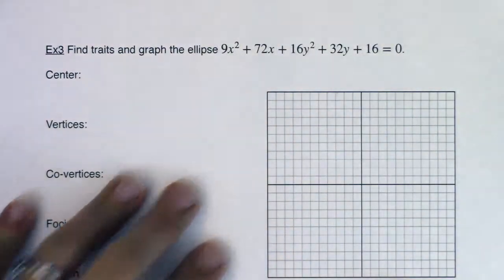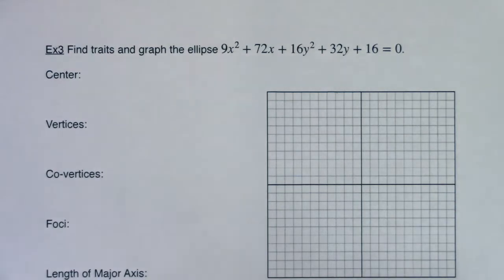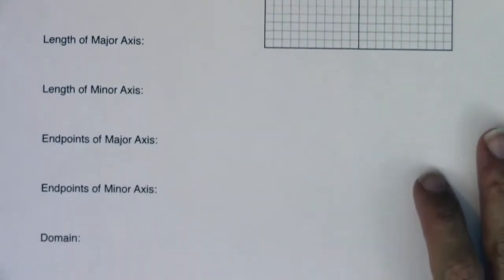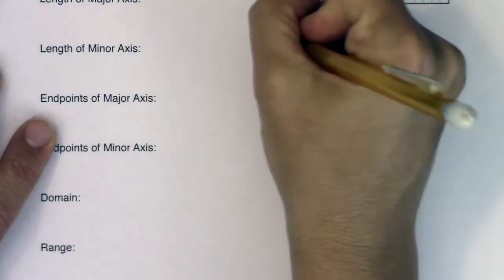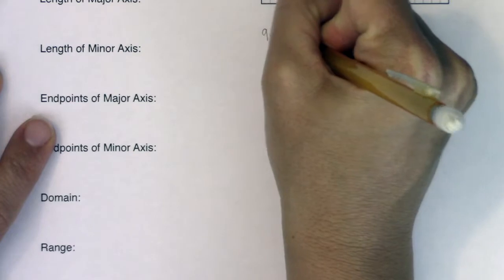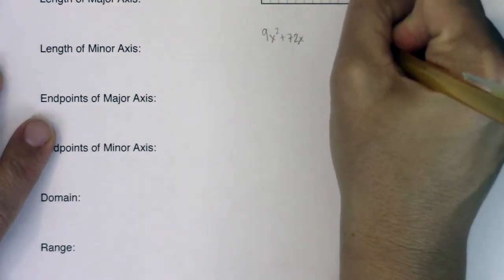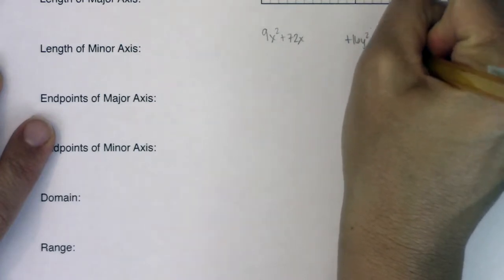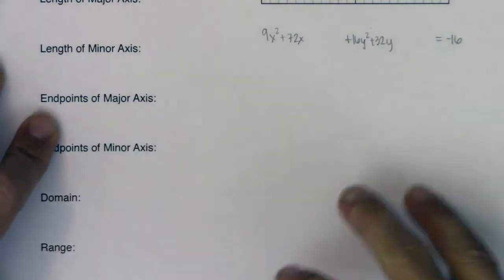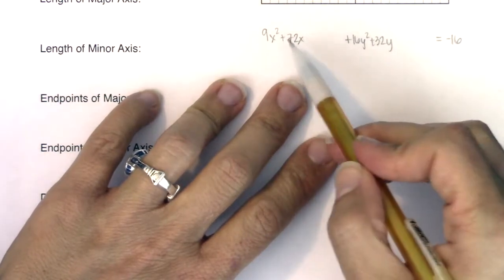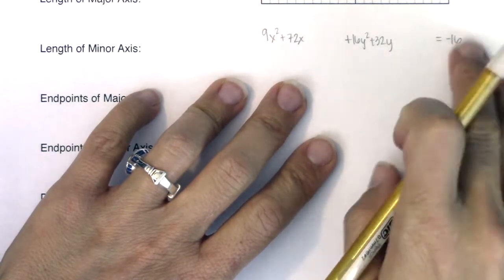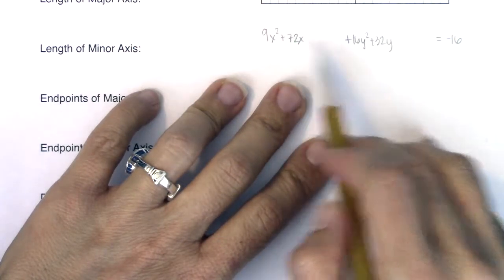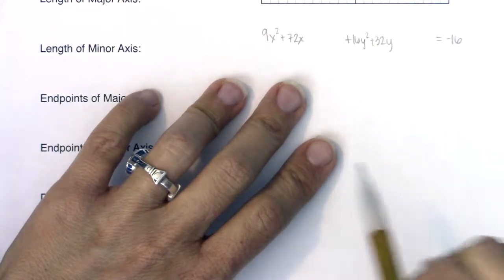Let's get this equation into standard form and then start picking off all of these traits. When completing the square, your starting point is: get all the terms with x clumped together, get all the terms with y clumped together, and get any constant moved to the other side of the equation. So I had two terms with x's, two terms with y's, and a constant of plus 16 — I just moved it to the other side.